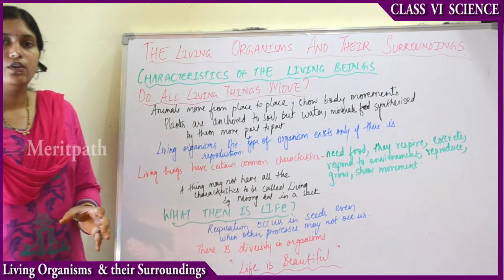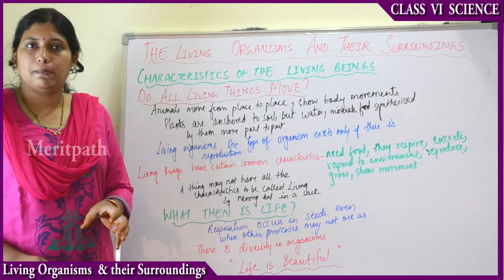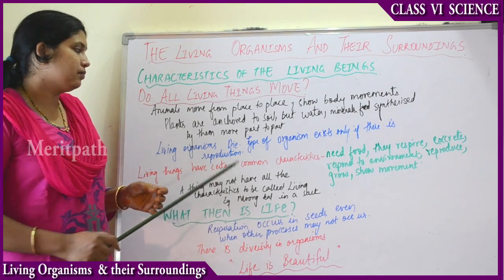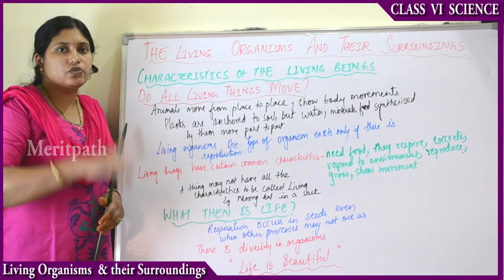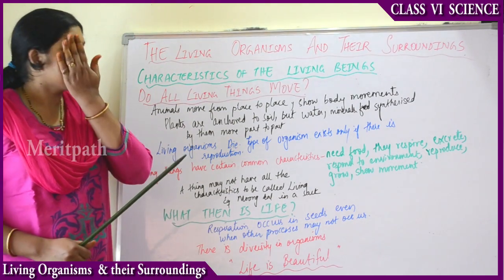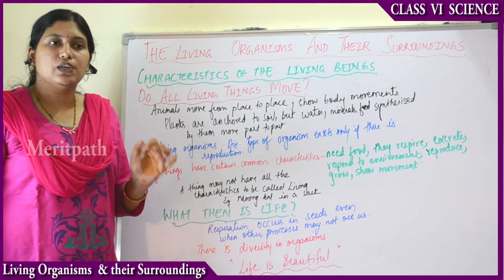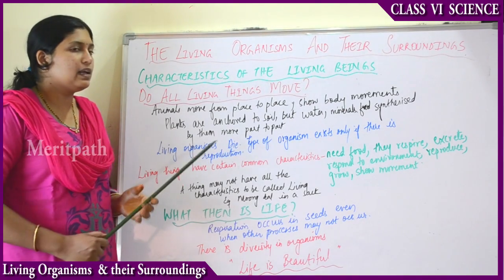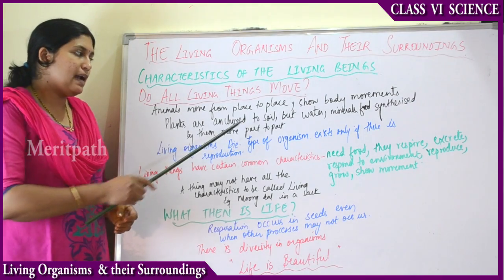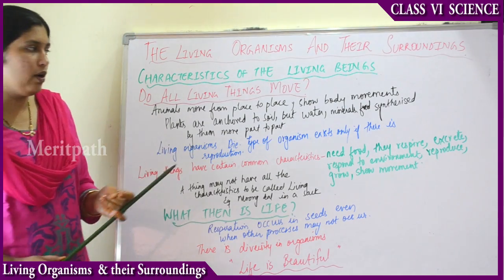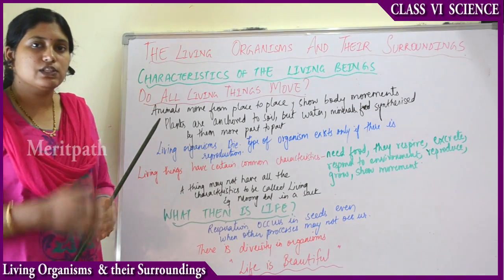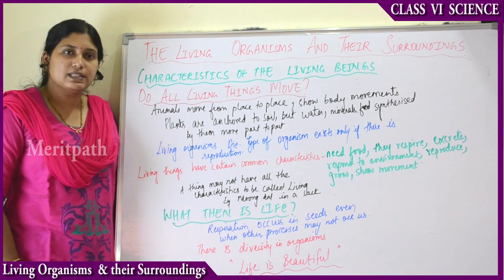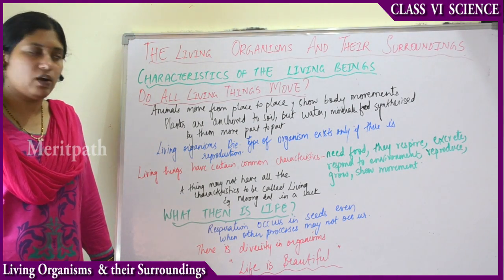Do all living things move? Plants are living things but they are stationed at one place — they do not move from place to place. However, the food synthesized by the plant and water move within the plant horizontally and vertically, from the roots to the leaves, with the help of vessel-like structures called xylem and phloem. Animals move from place to place and show body movements, but plants are anchored to the soil. Xylem and phloem act like pipes and help in transportation of food and water.